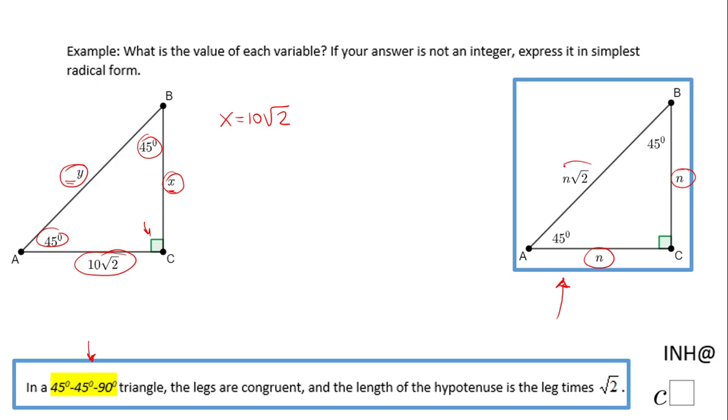If you take a look, this y is this guy right, which is the leg times square root of 2. So in our case, y will be this leg, which is 10 square root of 2, this n right here, times another square root of 2 which comes in the formula.